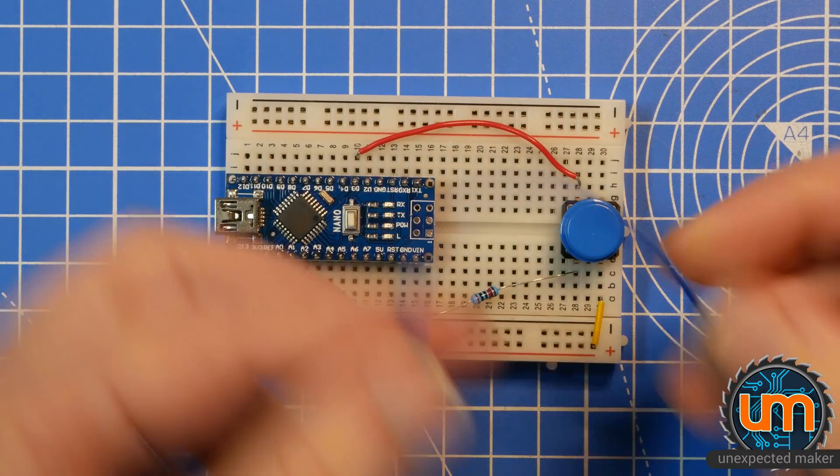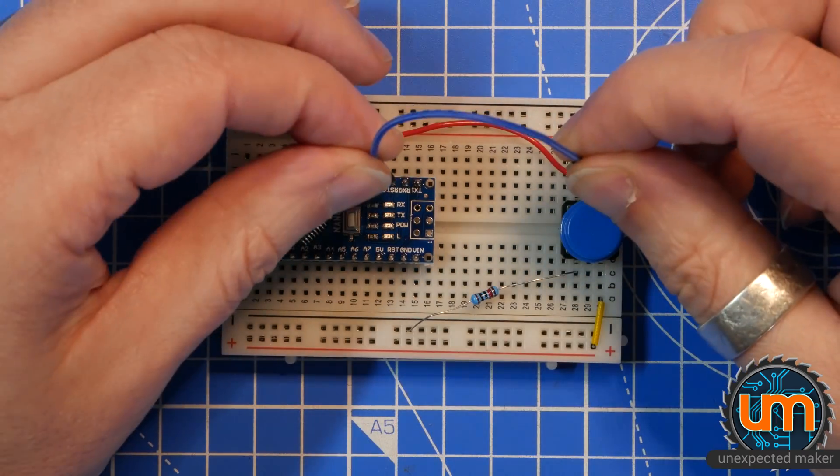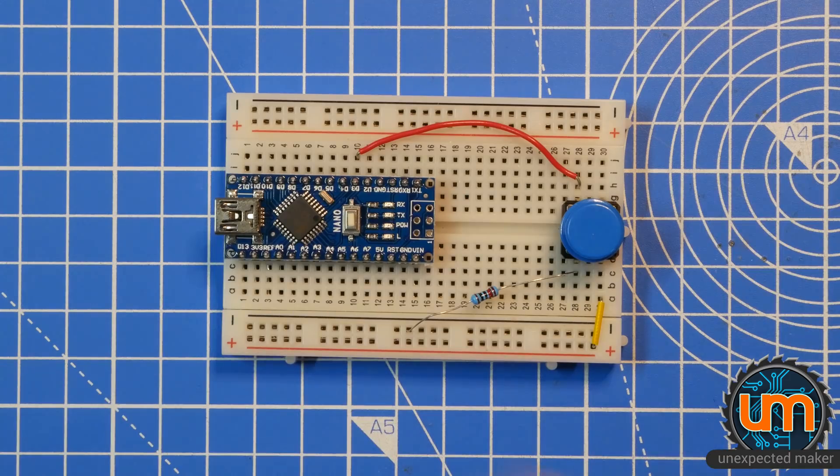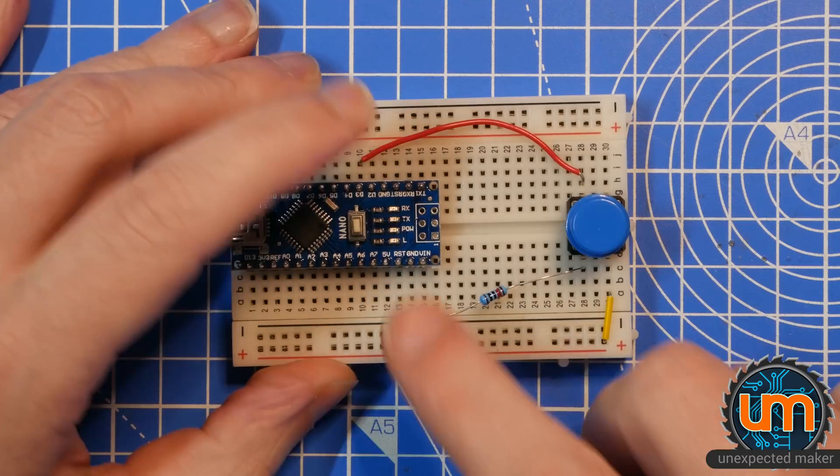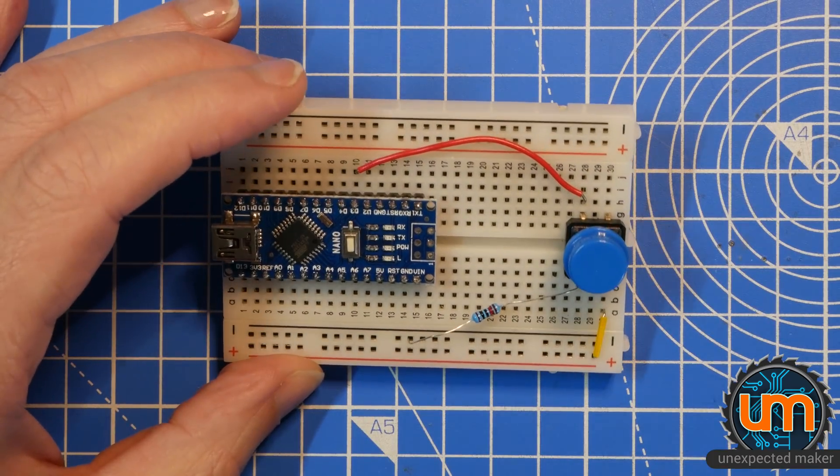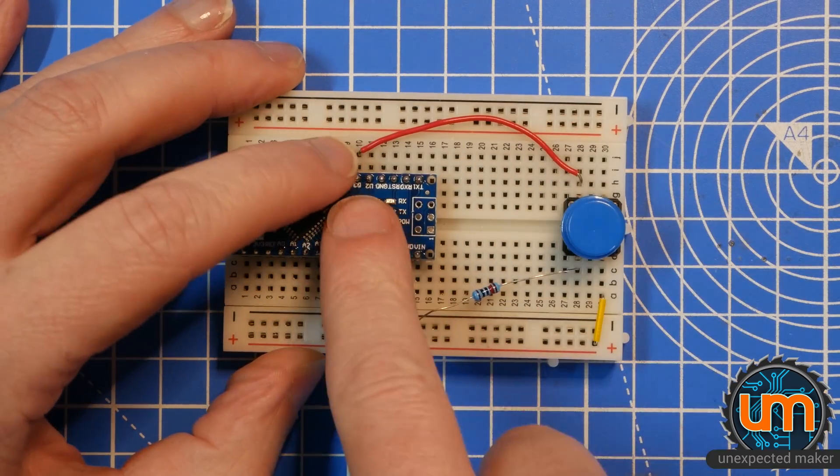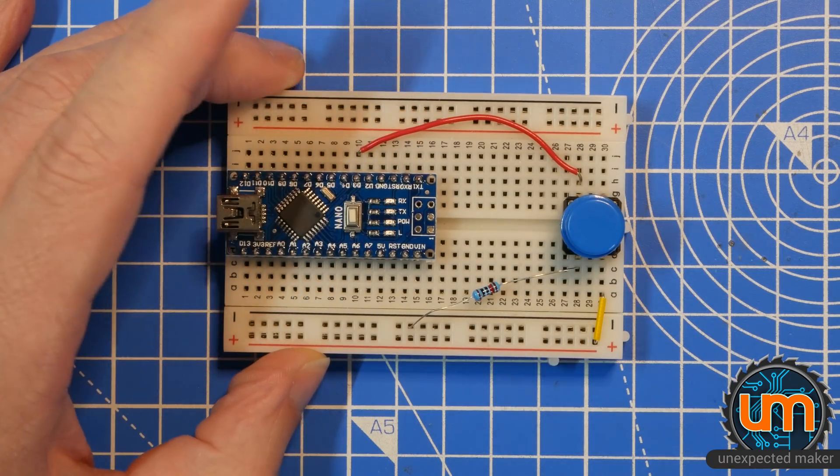Now I could just use normal DuPont wires, but then they stick up and they get in the way of the button. So I just didn't want to do that. So that's not very neat, I know, but it's all about functionality. So that's going to get pulled to ground always until you press a button and it'll go high. Cool.